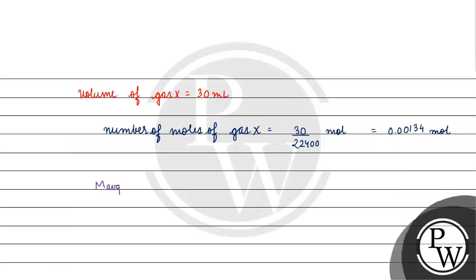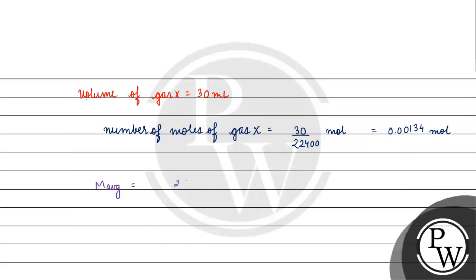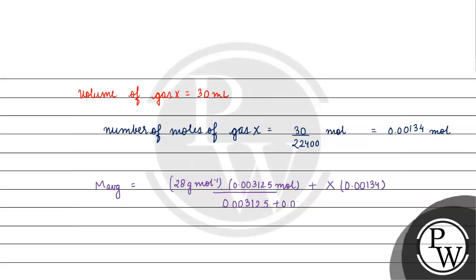Now we apply the average molecular mass formula. M1 is the molecular mass of nitrogen, which is 28 g/mol. We multiply by the moles of nitrogen, 0.003125, plus M2 (unknown) multiplied by 0.00134, divided by 0.003125 plus 0.00134. The average molecular mass is given as 37.60.